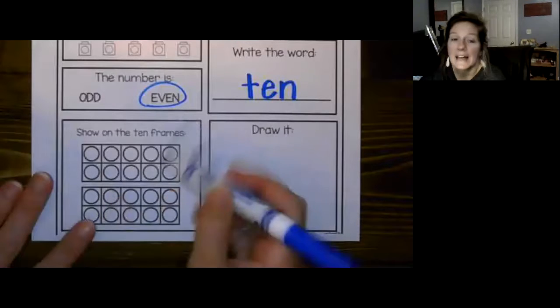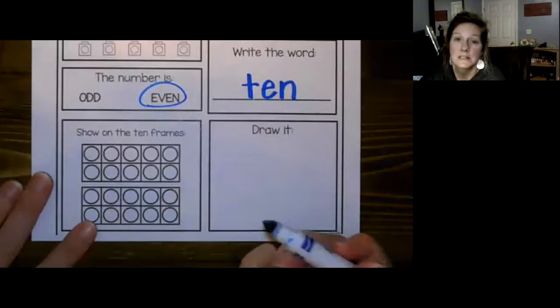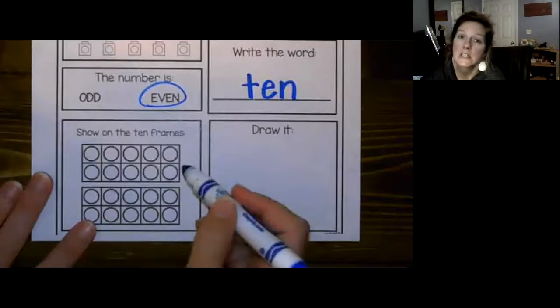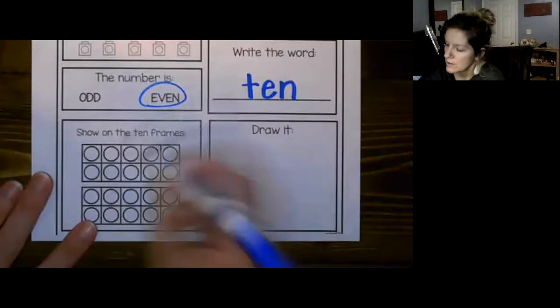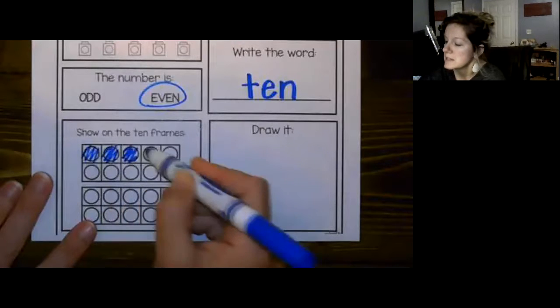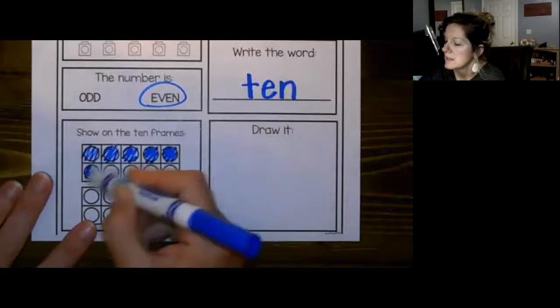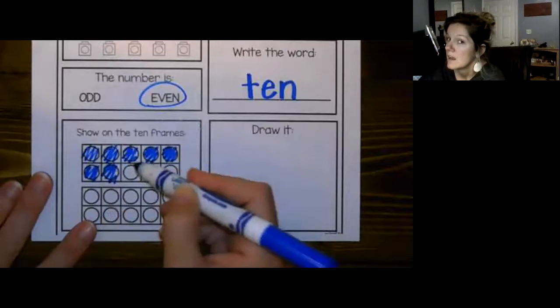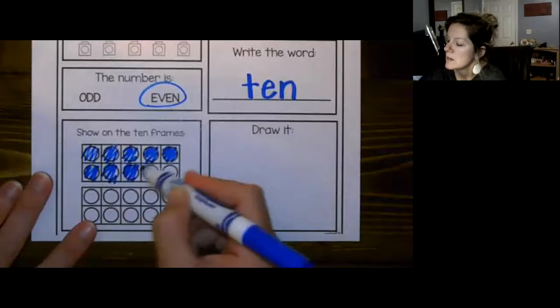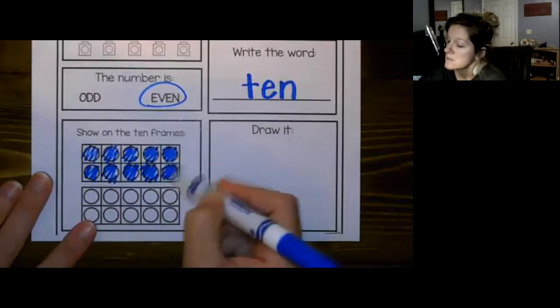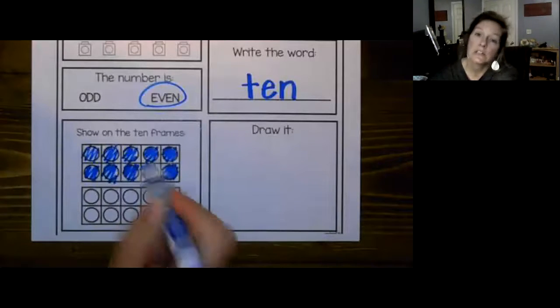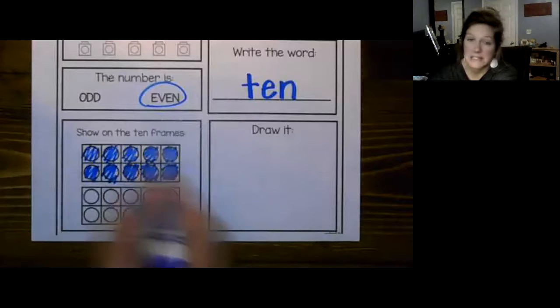Going back to 10, we have two 10 frames. If we have two of them but we want to color 10, we're going to color just one 10 frame. Do we need to count it? No. Why do we not need to count it? Because you're smart. You don't need to count it because you know just by looking at it that that is 10.